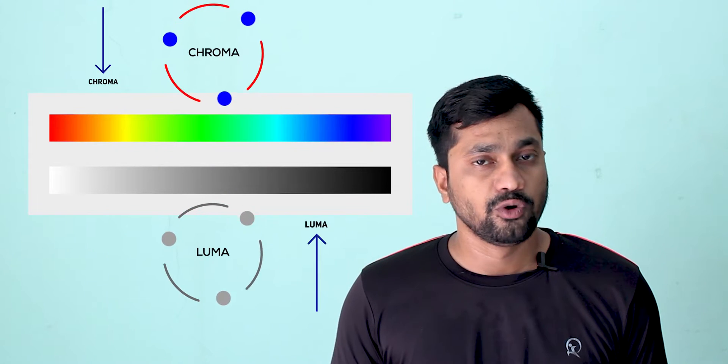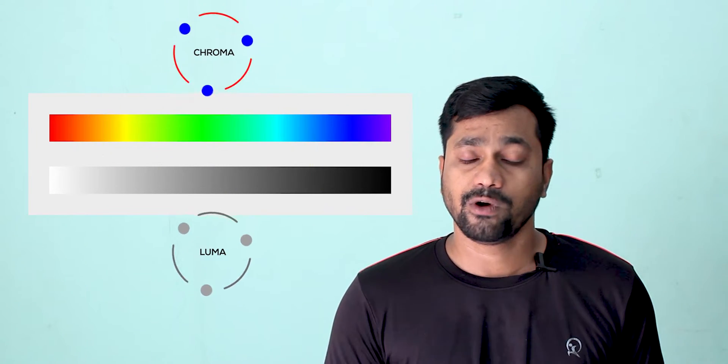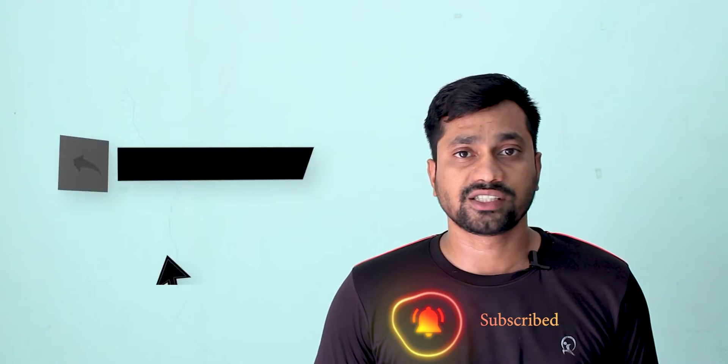What is chroma? Chroma means color, and brightness is called luma. If I remove chroma from this video, it will immediately turn black and white. If I remove luma from this video, it will turn completely black — you cannot see anything. Hence luma, meaning brightness, is more important than chroma. We are not going to touch the luma part in this video.